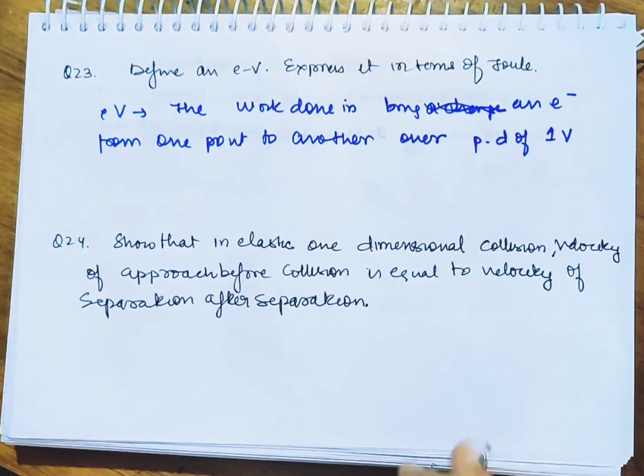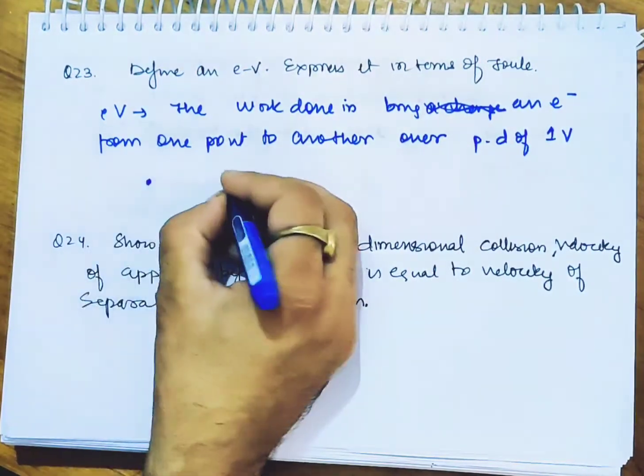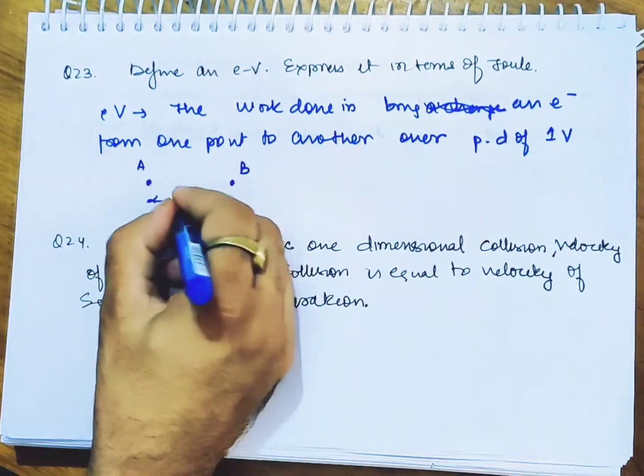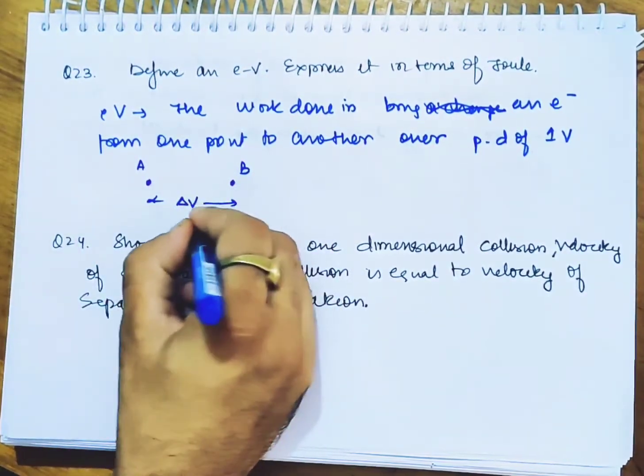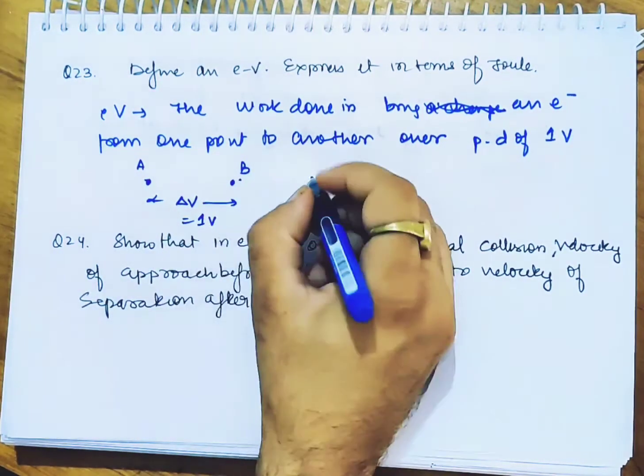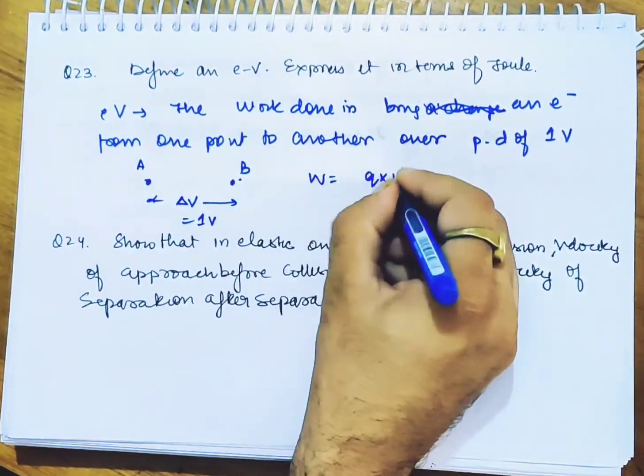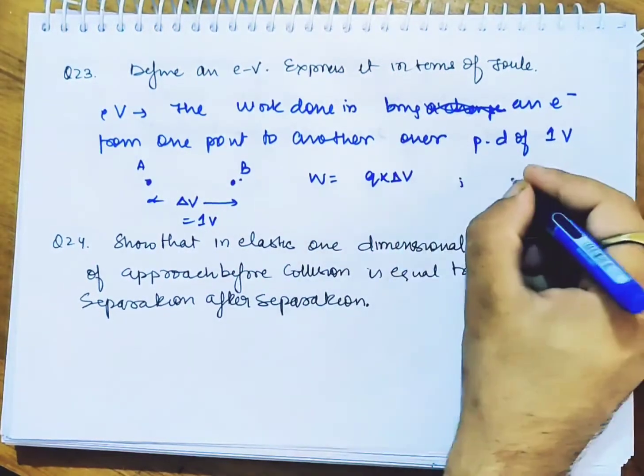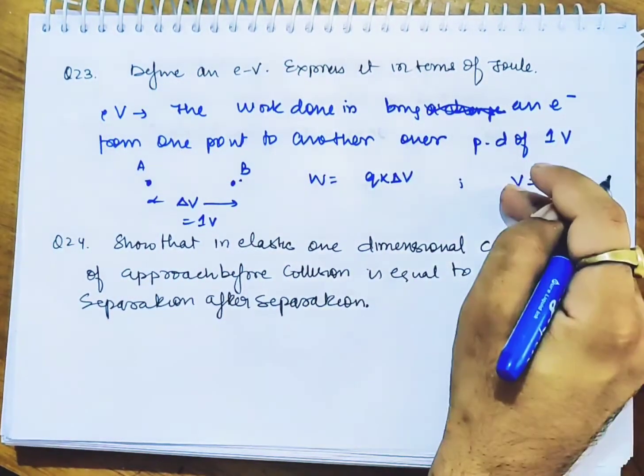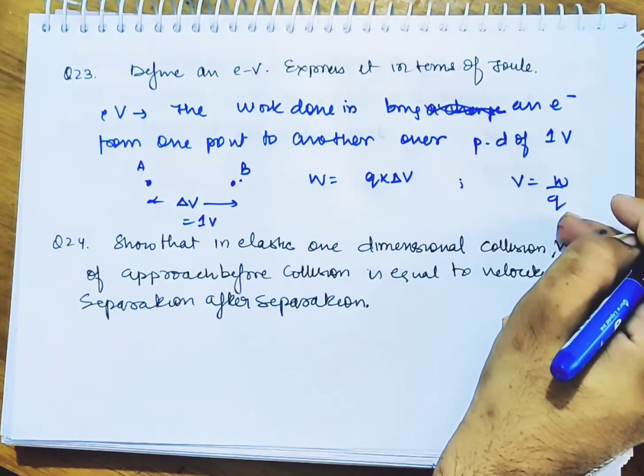This is the electron volt definition. If point A to B has a potential difference delta V equals one volt, then work done from A to B equals charge into potential difference. You have read that potential is work done by unit charge. If it's one volt and charge is electron, then work done is electron volt.